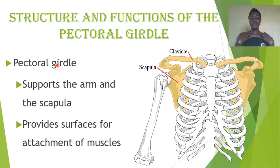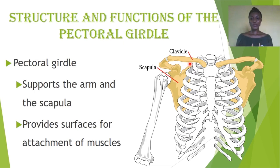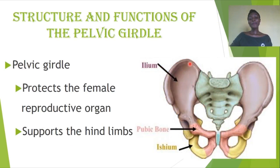The first part of the pectoral girdle is what is known as the collar bone, or the clavicle. The second is the scapula — the bone at the back which forms the second half of the pectoral girdle. These provide a surface for attachment of muscles and they also support the arm.